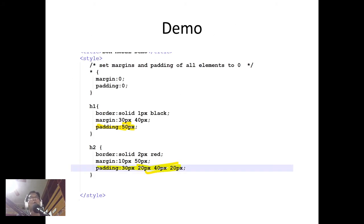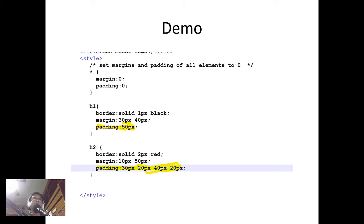We have our code from before but this time we've added paddings. Remember, padding is inside the border — outside the border are the margins, and inside the border is the space for padding, before the element's contents. In this example, padding: 50px means all four sides — top, right, bottom, and left — have identical values of 50px.